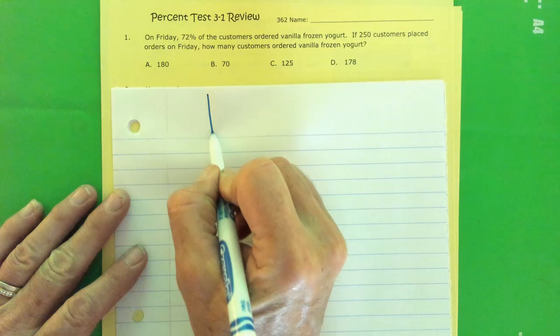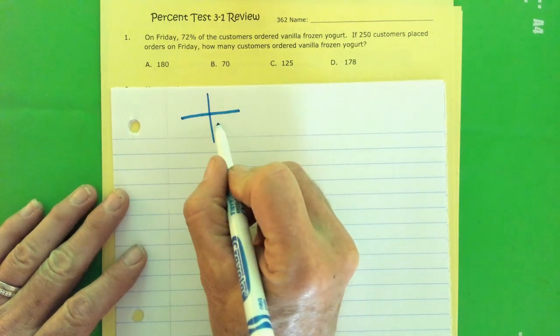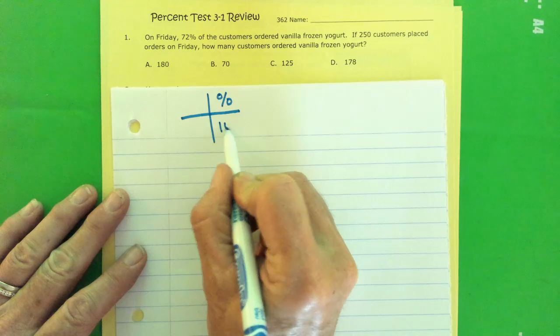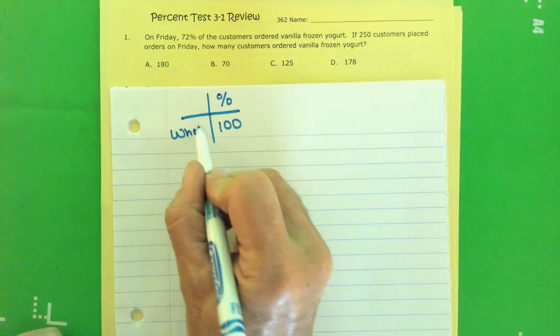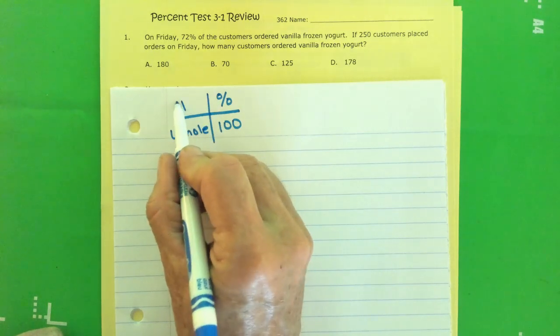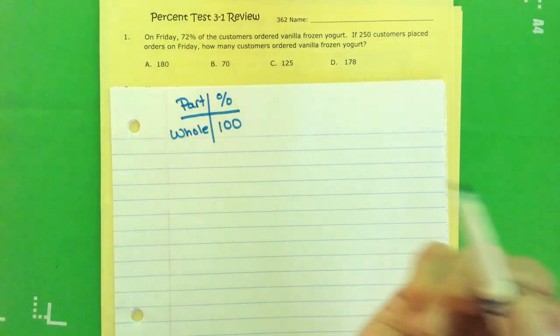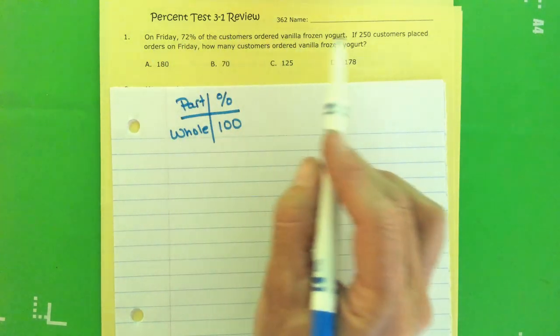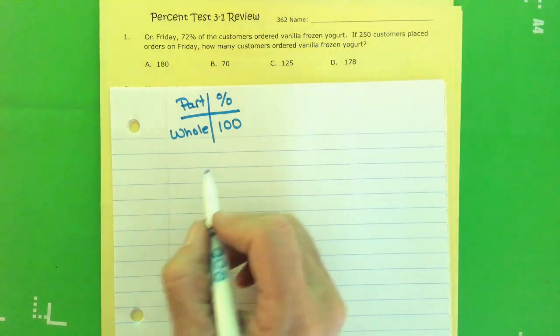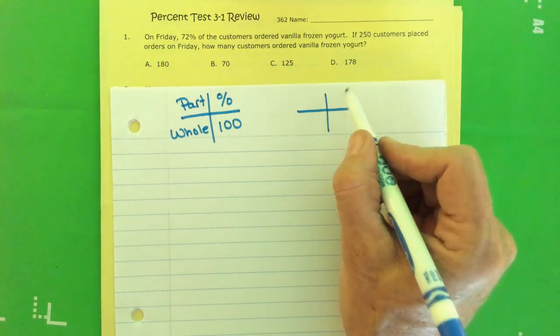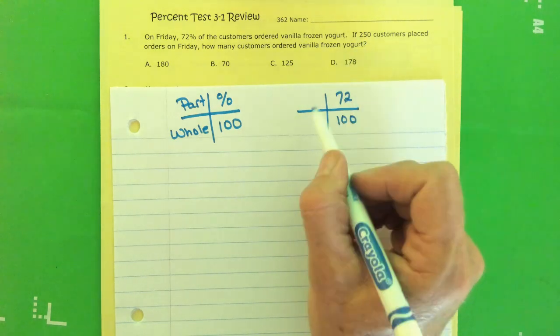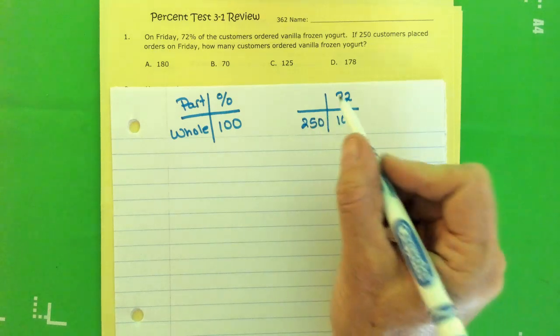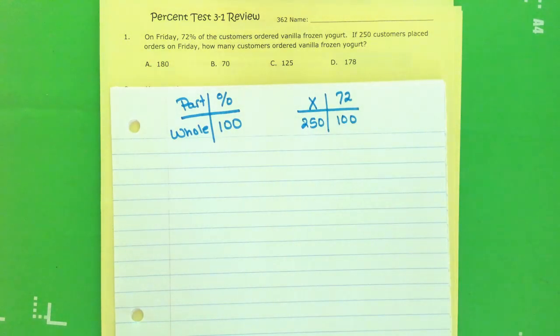We're going to be using our proportion percent table. Remember all percents are out of 100, and if you have 100% that means you have the whole or the total amount and the percent you're talking about is just part of the whole amount. We're going to set up our numbers from the scenario into this table.